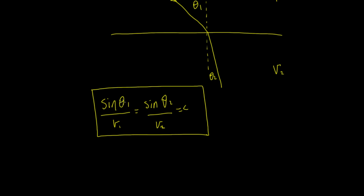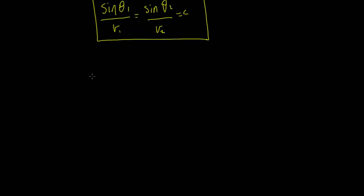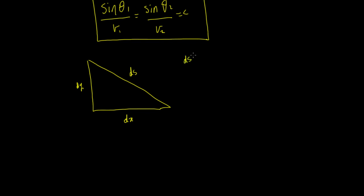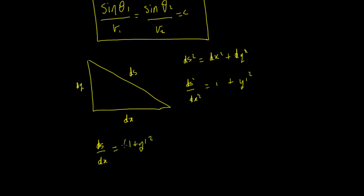Before we get started, I'll remind you of a couple of identities we're going to use. Looking at Pythagoras' theorem in terms of infinitesimals: we call that dx, dy, and ds. Then ds squared equals dx squared plus dy squared. Dividing throughout by dx squared gives ds squared upon dx squared equals one plus y-prime squared. Taking the square root of both sides gives ds upon dx equals the square root of one plus y-prime squared.